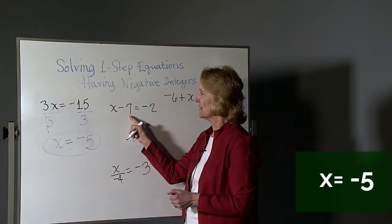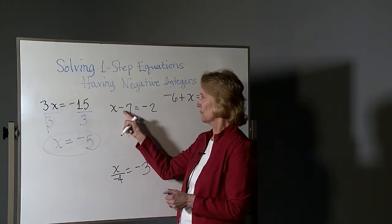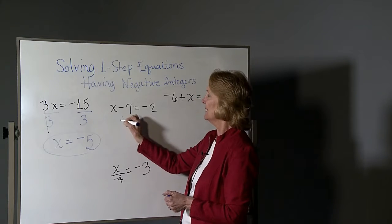This one, the opposite operation for negative seven, so subtracting seven, would be to add seven.